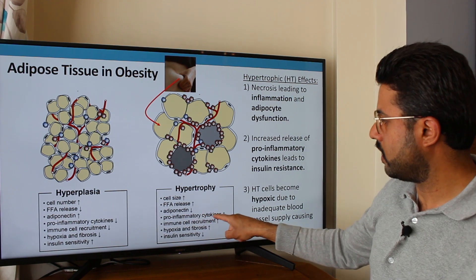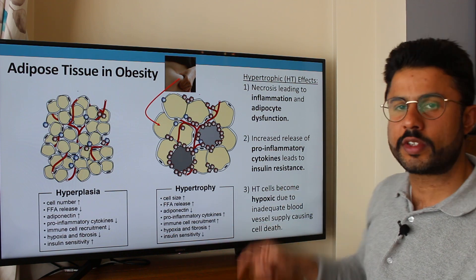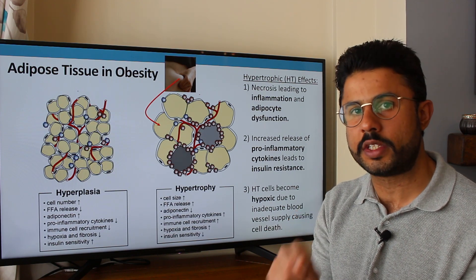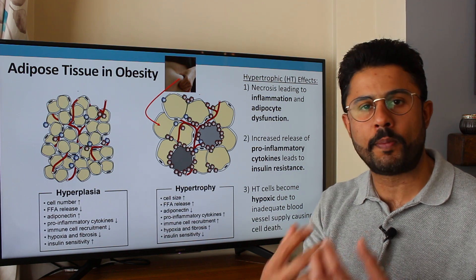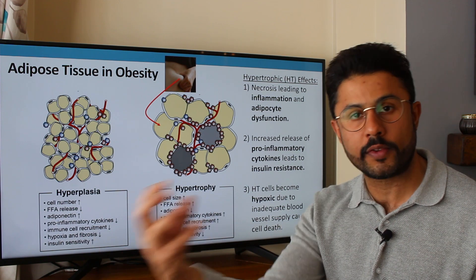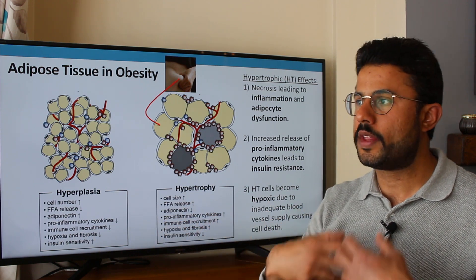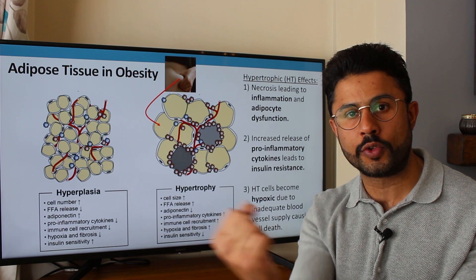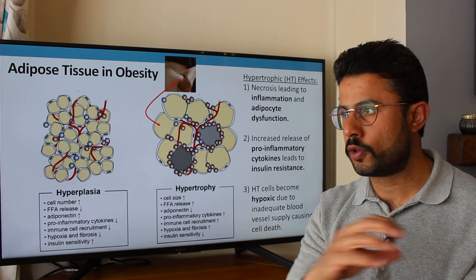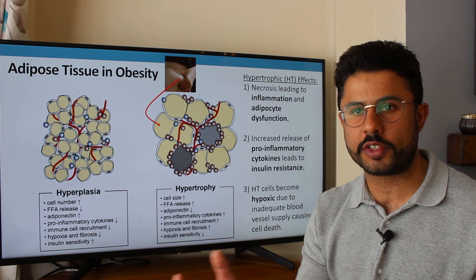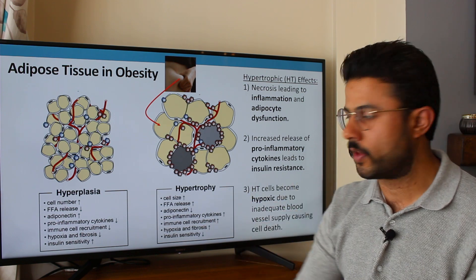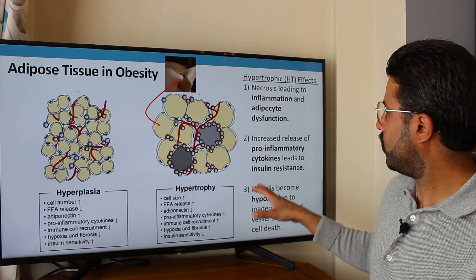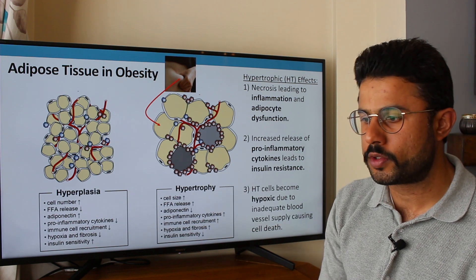Pro-inflammatory cytokines can independently cause a condition called insulin resistance. A quick definition: insulin resistance is when your body releases insulin after a meal to clear circulating glucose, but the cells become resistant to that insulin. Instead of glucose being taken up into the muscle and liver, it stays within the blood vessel and causes oxidative stress, which can damage the inner lining of the blood vessel. Insulin resistance is a very major risk factor for cardiovascular disease, and is something caused by adipose tissue dysfunction in obesity.